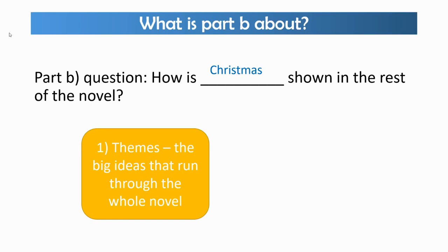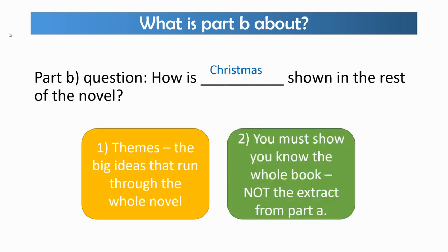A theme is a big idea that runs through the whole novel — something that Dickens wants us to take away and think about that might relate to our lives as well as the characters in the book, so bigger than the story itself. Notice that you have to show that you know the whole book, not just the extract from Part A.